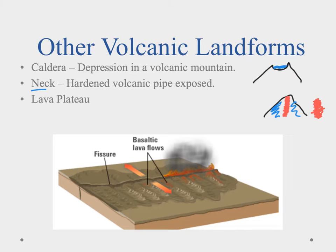Finally, lava plateaus form where a fissure produces a broad flow over large areas of volcanic activity. These can be seen in the Cascades, in parts of Canada, and in Idaho, where massive lava plateaus spread across the landscape.